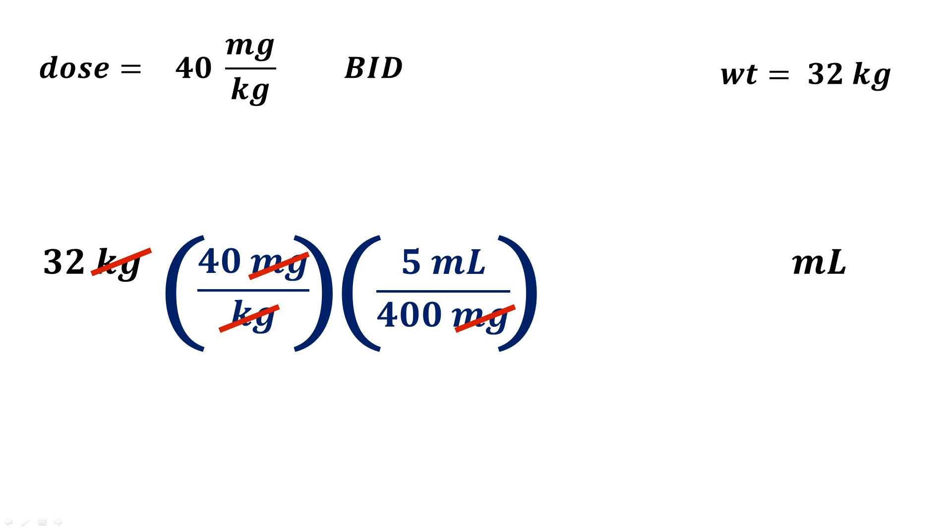Now that we've canceled all the units what we're left with is milliliters and this is the information that we're trying to find. And we know that once we run our math our answer will be correct because it is dimensionally correct which means that the units we're left with are the ones that we're actually looking for. So now let's run our math 32 times 40 times 5 and we divide all this by 400 which results in 16 mLs per dose. And we can now write our prescription for amoxicillin 16 mLs BID of a 400 milligram in 5 mL suspension.